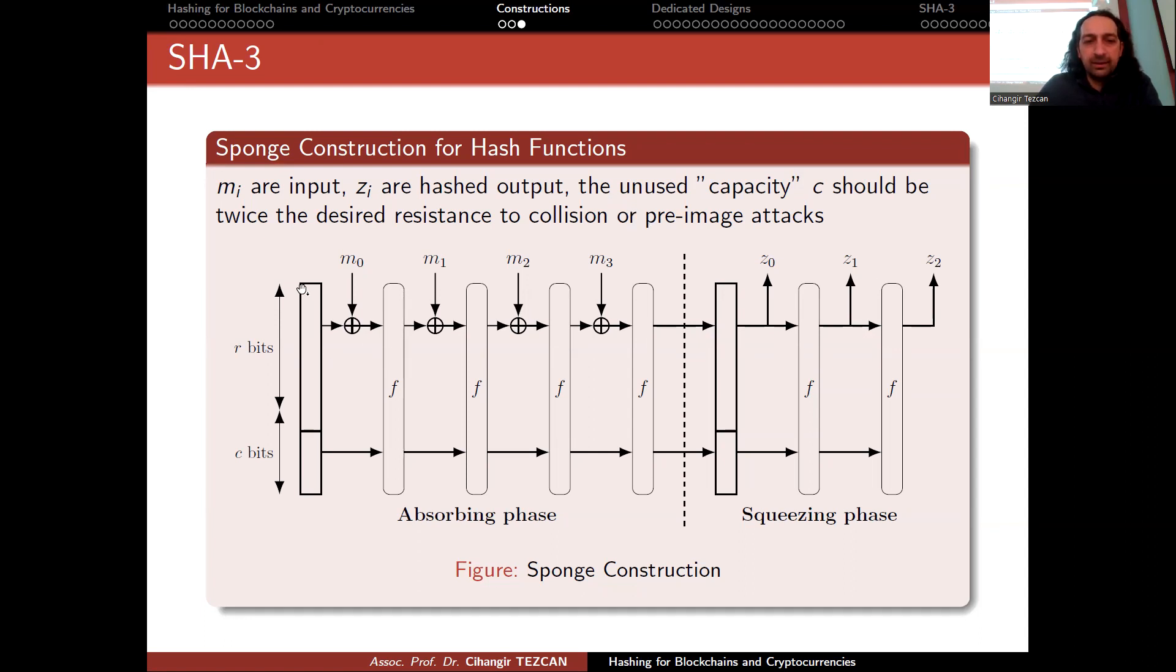There is an internal state in these functions, and it is divided into two parts. r bits represent the rate, c bits represent the capacity. The important thing is that the unused capacity c should be twice the desired resistance to collision or pre-image attacks. So the sizes of this rate and capacity actually depend on the output you want.